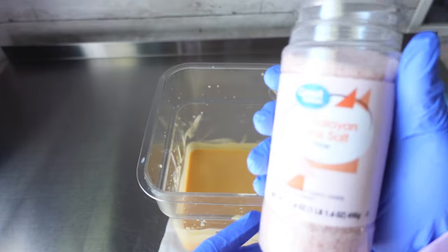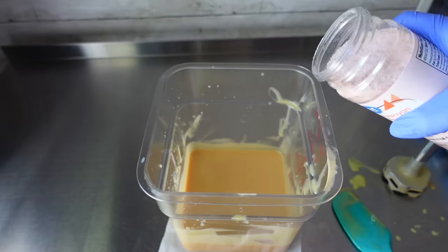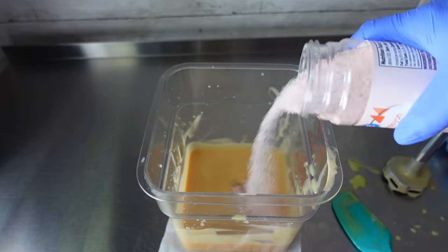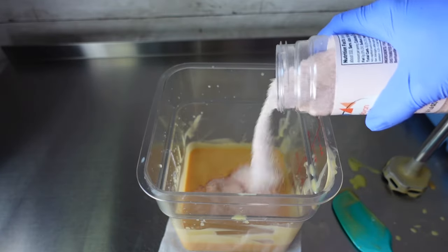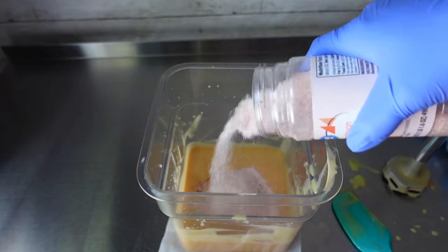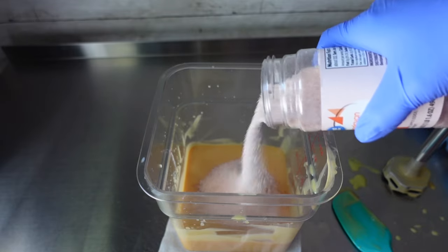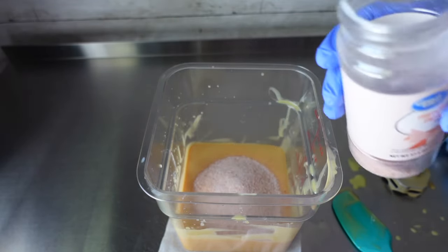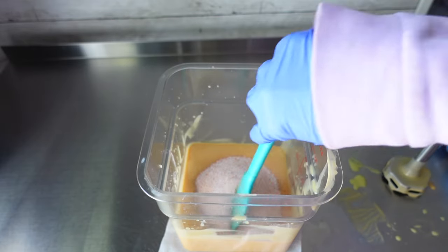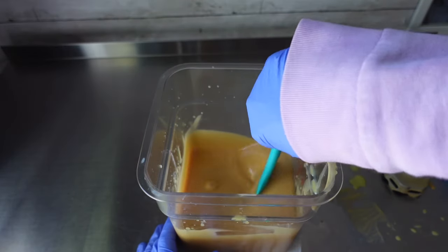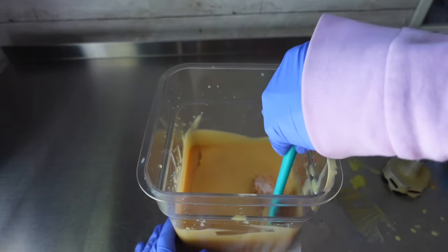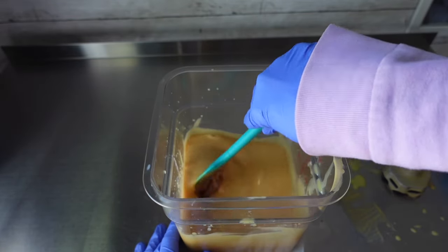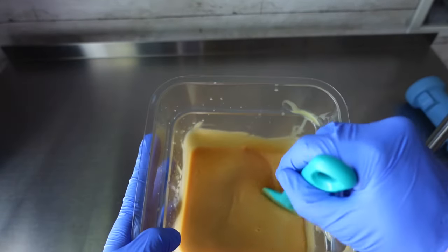All right, so now, here I am just going in with my pink Himalayan salt. Now, for this soap, the salt bars, from my understanding, you do a one-to-one ratio with the salt. So, for example, oils and salt, one-to-one. My recipe called for 16 ounces of oils, so therefore I used 16 ounces of salt. Again, if your recipe calls for 24 ounces of oils, then you would just do 24 ounces of salt.